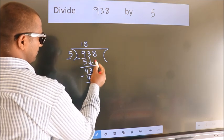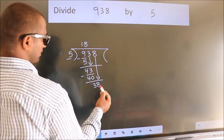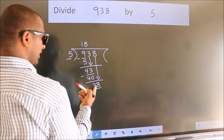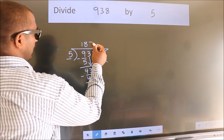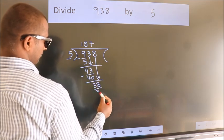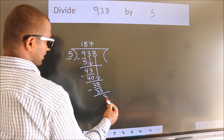After this, bring down the beside number. So, 8 down. So, 38. A number close to 38 in the 5 table is 5 times 7, which is 35. Now, we subtract. We get 3.